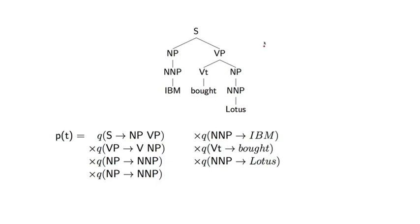So here's a very simple tree. And as we saw, the probability of this tree is going to be a product of terms, one Q parameter for each rule that we see within the tree. And what is striking about PCFGs is that they make very strong independence assumptions.